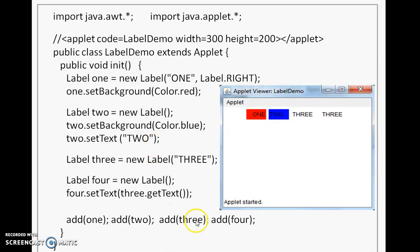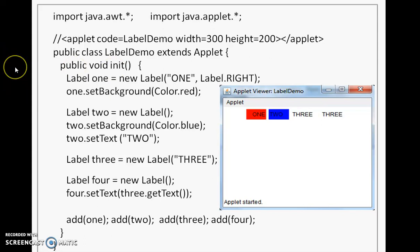Let's look at a code example. At the top there are two imports: java.awt and java.applet — for including the Label class and using the Applet class respectively. We have an applet tag and a class LabelDemo extending Applet, which contains an init method. The init method, overridden from Applet, is used for initialization — doing things before the applet is displayed. Two things are done in init: first, create all the components; second, add them to the applet.